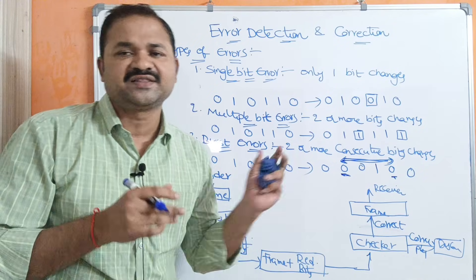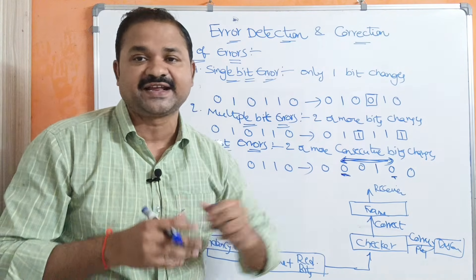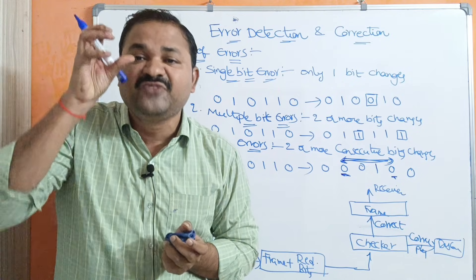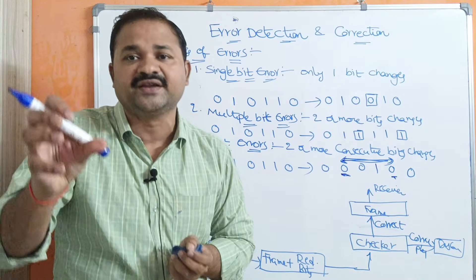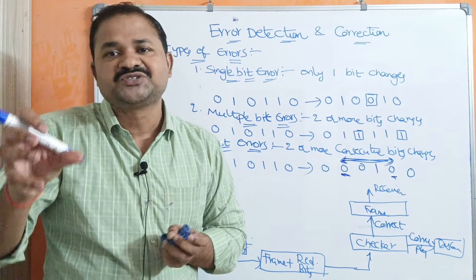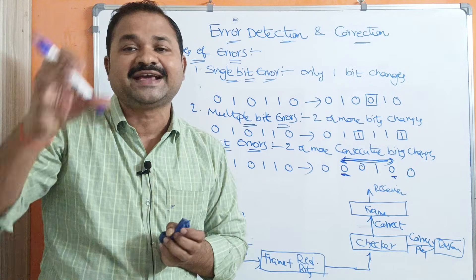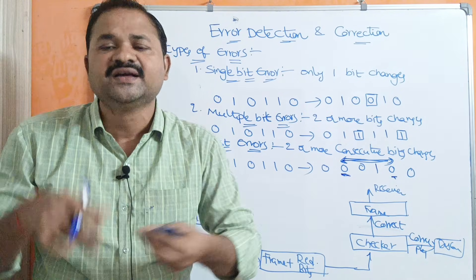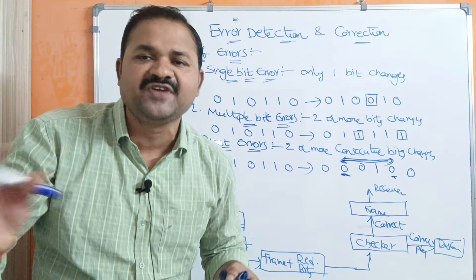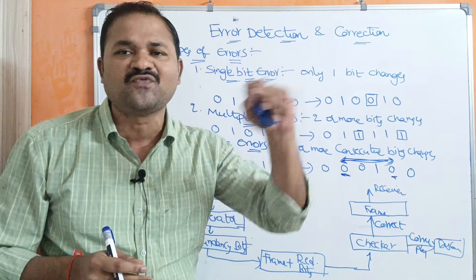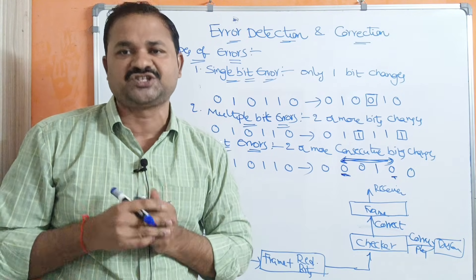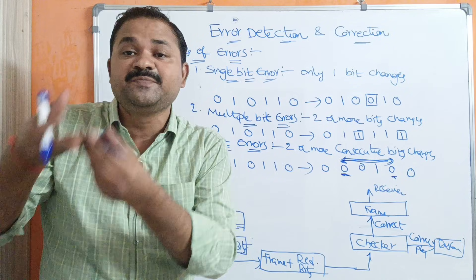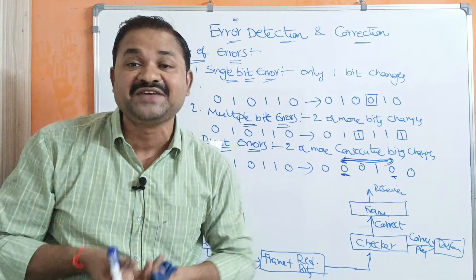For determining the exact error position, we use error correction. Error correction means the exact bit position where the error occurred will be determined as well as corrected. So the error bit position will be identified.